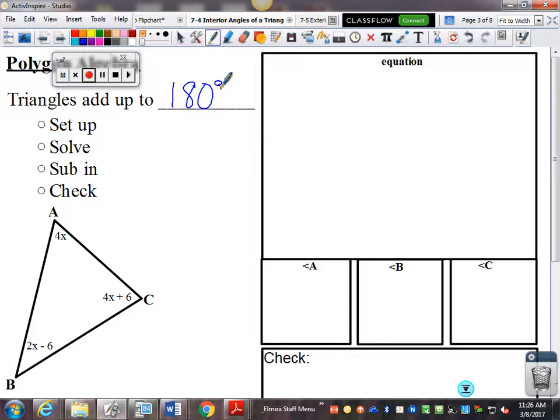So, if I've got one angle labeled as 4x, that's angle A. Another angle labeled as 2x minus 6, that's angle B. And a third angle of 4x plus 6. Then, those angles add up to equal 180.